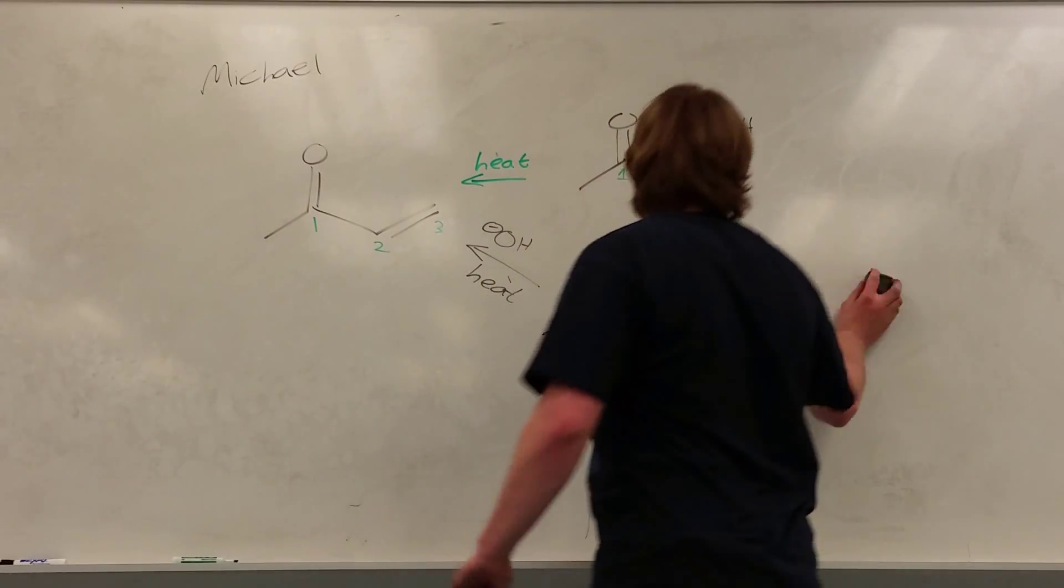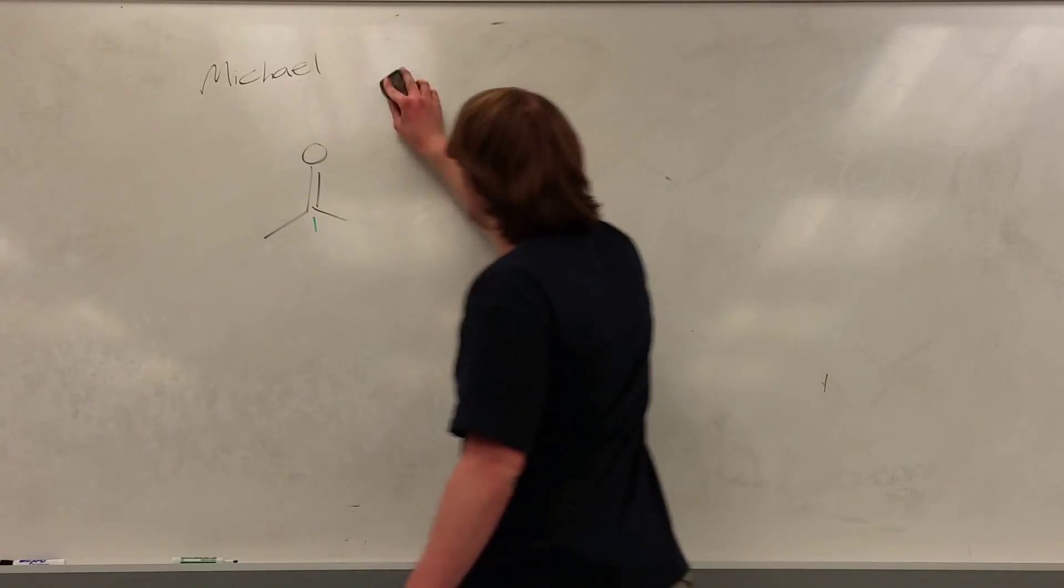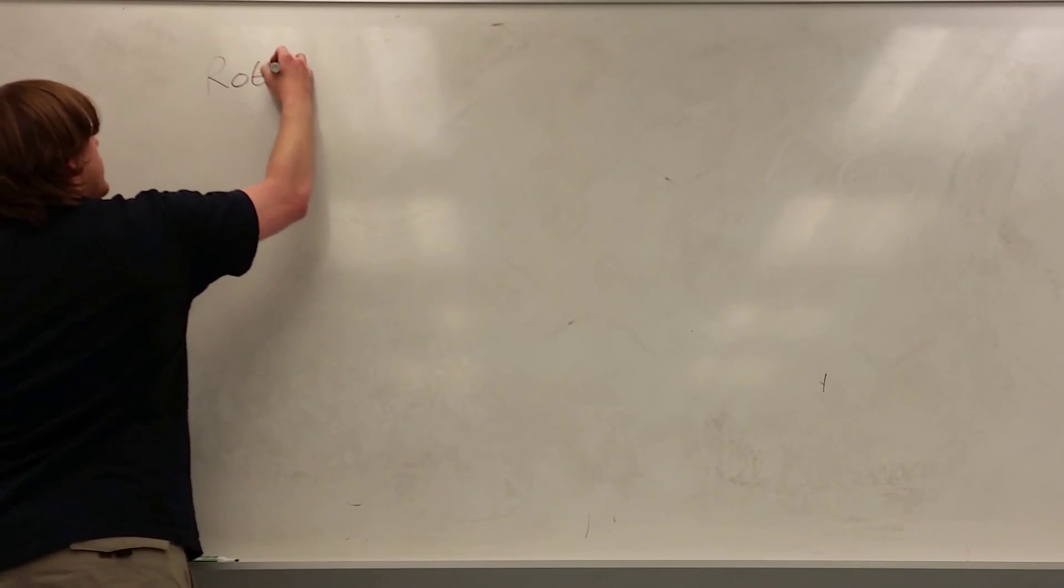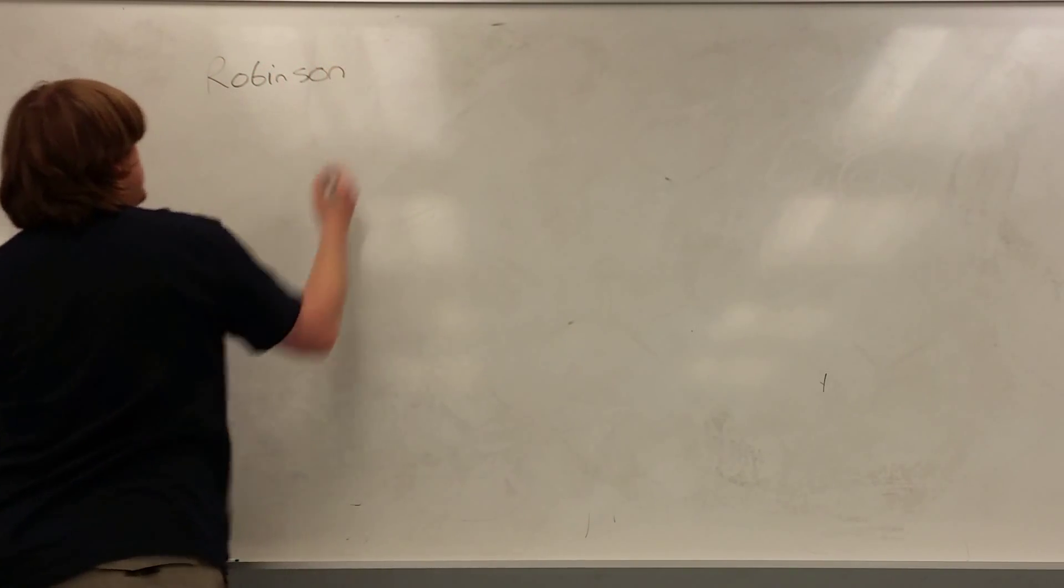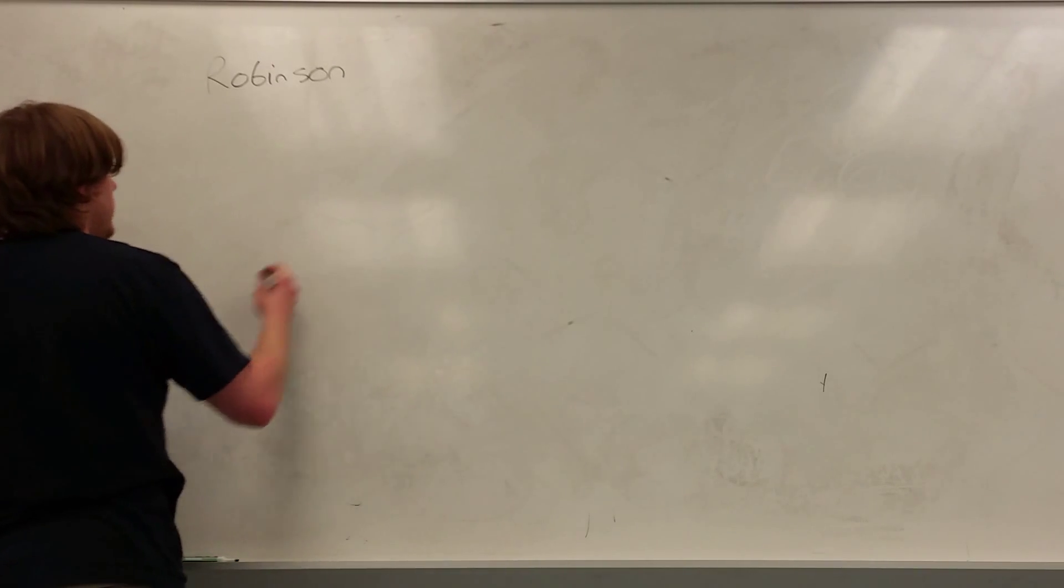That's it for Michael additions. There's only one last thing to talk about from chapter 19, and that's the Robinson annulation, the fun part, because it combines a bunch of things in one. So I'm going to prove I don't know how to spell his name, but Robinson, you get the idea, however many B's or N's are in it. The Robinson annulation.